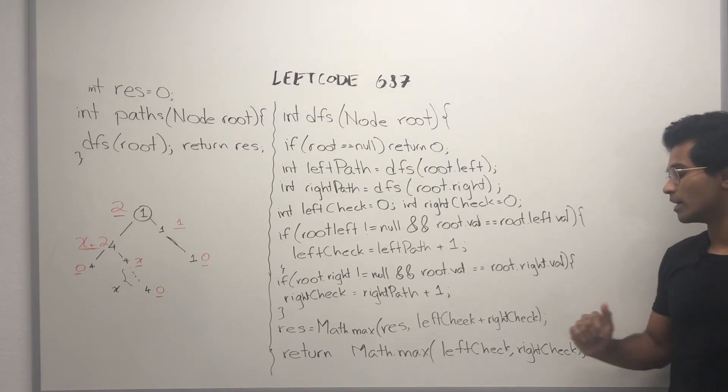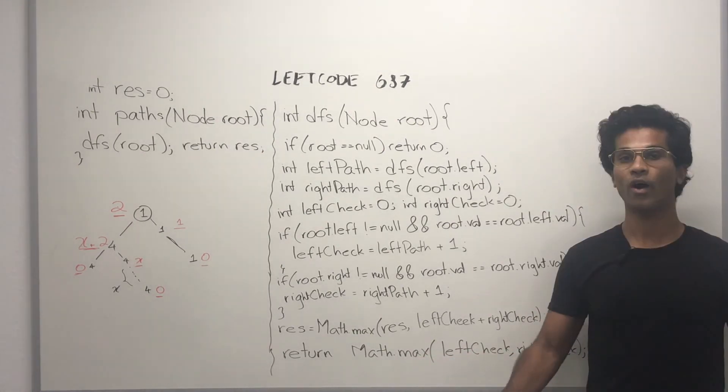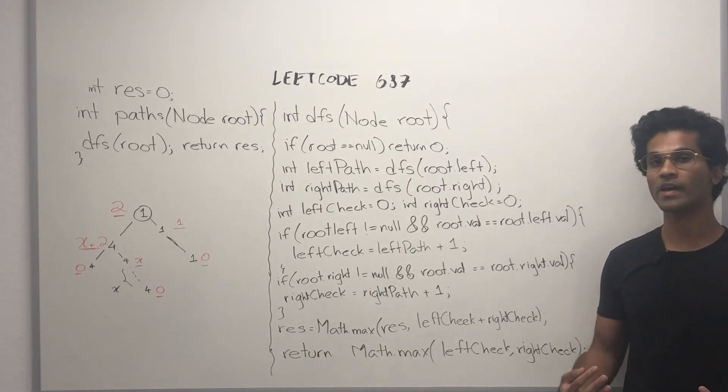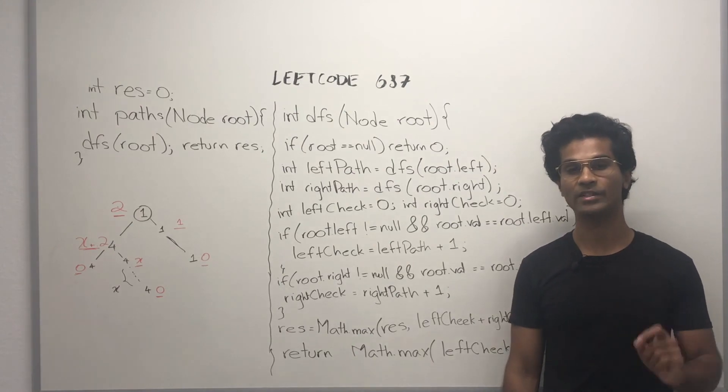Next, what we're going to do is see what's the maximum we can have of the left check and right check. Ultimately, we return and we don't care what the actual root returns, we just want to know what happens at each level.